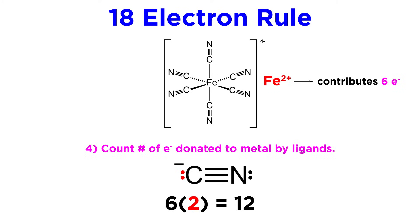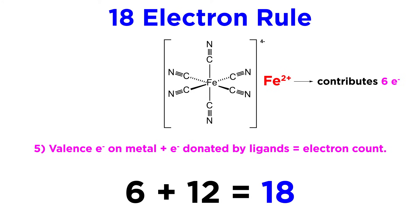Each cyanide ion contributes two electrons — the two in the lone pair on carbon — so that is a total of twelve from the cyanide ions. Six plus twelve is eighteen, so this complex does satisfy the eighteen electron rule and should be expected to be quite stable.